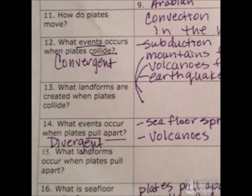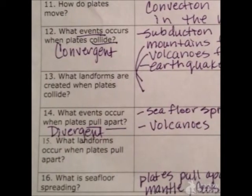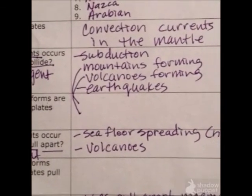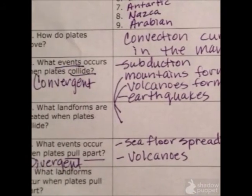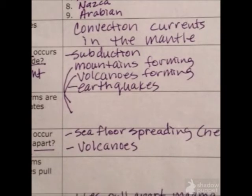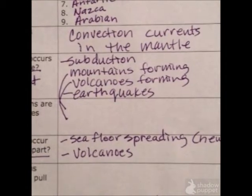Number 12 and 13 kind of go together. Number 12 asks: what events occur when plates collide? I wrote convergent because that's the name of the boundary — when plates go toward each other or collide, it's the convergent boundary. The events include subduction, where the more dense plate goes underneath the other and down into the mantle; mountains forming as the plates push up the land; volcanoes forming; and earthquakes. Make sure you have those four items for 12 and 13.